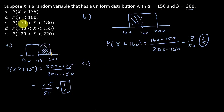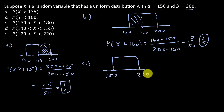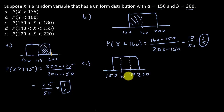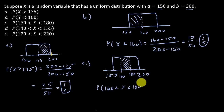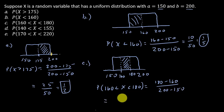Part C: the probability that X is between 160 and 180. Drawing the picture, I mark both 160 and 180 and shade that region. The probability is 180 minus 160 over 200 minus 150, which is 20 over 50, or two-fifths.